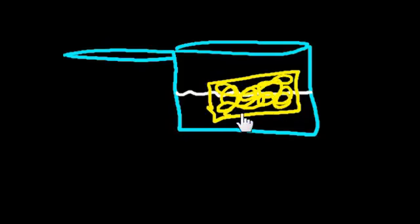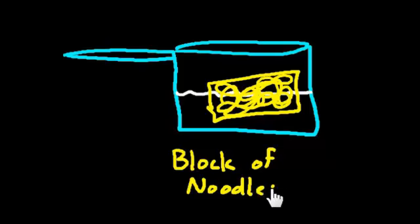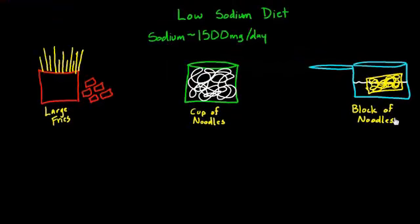And I like to eat those. And so these are my dehydrated noodles in a pot of water. And I'll call that a block of noodles. And I usually eat one whole block at a time with the flavoring. So I've got a few things here. Block of noodles, cup of noodles, and also my large fries with ketchup. And I know my limit is 1,500 milligrams in a day. So how far along do these things get me?